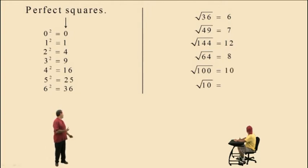Square root of 10, 10 is not a perfect square. So to evaluate that square root, you need a calculator and you'll have to round off your answer. In this case, square root of 10 is 3.162 rounded to the nearest thousandth.